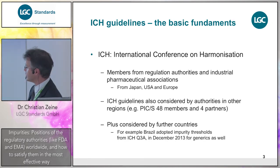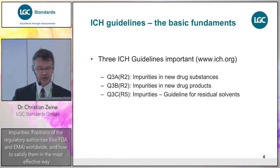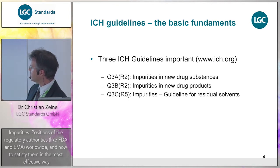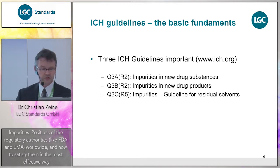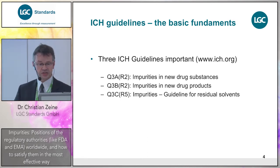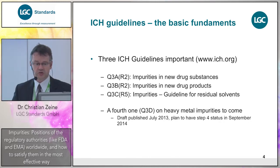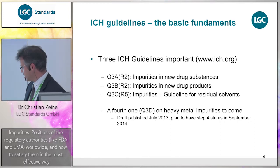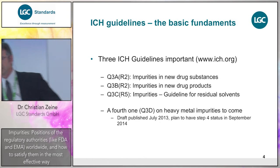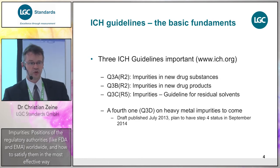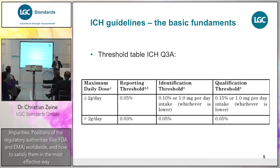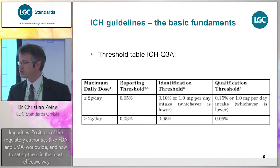Those thresholds are shown in the next slides. ICH has set up three guidelines for impurity testing: Q3A, Q3B, and Q3C. A fourth one on heavy metals impurities is on its way — it was expected to reach official status in September 2014 but is not ready yet, though it will become official quite soon.